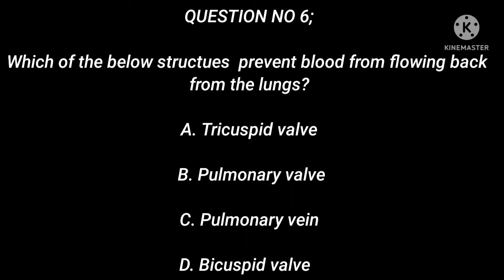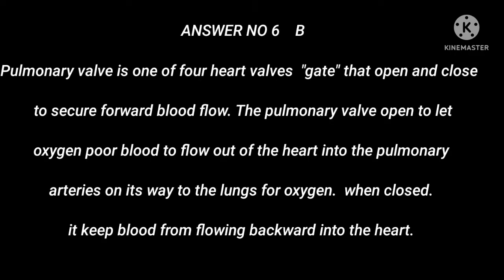Question number 6: Which of the below structures prevents blood from flowing back from the lungs? A. Tricuspid valve. B. Pulmonary valve. C. Pulmonary vein. D. Bicuspid valve. Answer number 6: B. The pulmonary valve is one of 4 heart valves that open and close to secure forward blood flow. The pulmonary valve opens to let oxygen-poor blood flow out of the heart into the pulmonary arteries on its way to the lungs. When closed, it keeps blood from flowing backward into the heart.